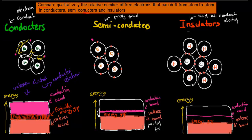Overall it's only very few that manage to do that — most of them are stuck in their original structure. For insulators, the insulator has a high energy gap, which means you can basically find all of your electrons in the valence band, and very few have managed to jump into the conduction band because the energy gap is so high. So: compare qualitatively the relative number of free electrons that can drift from atom to atom in conductors, semiconductors, and insulators.